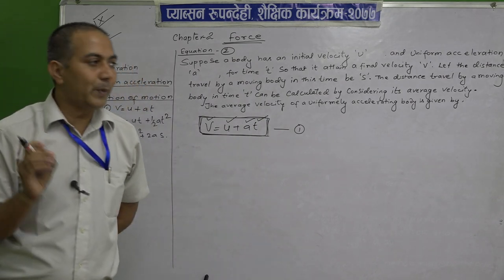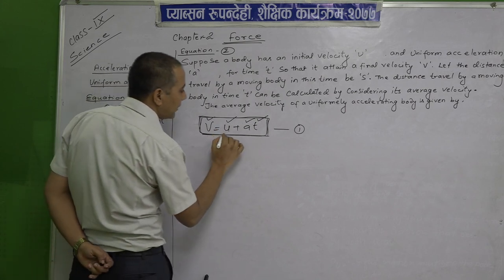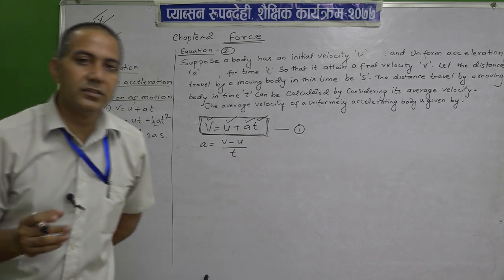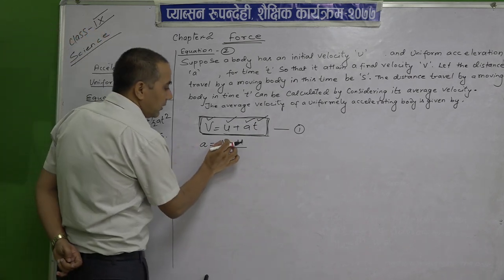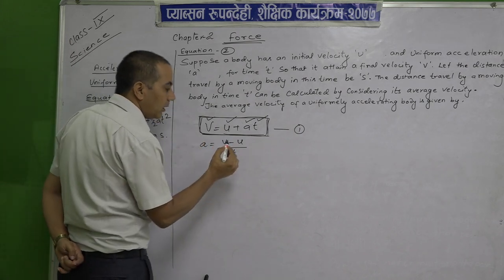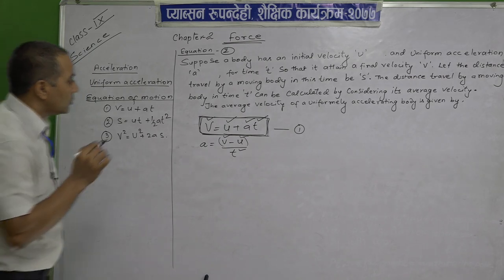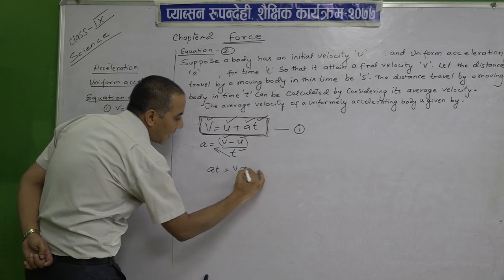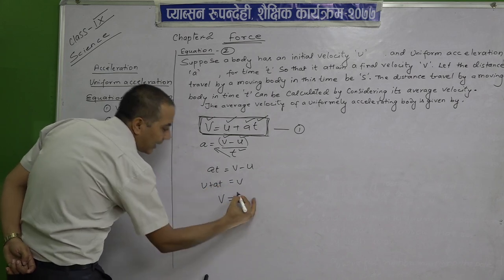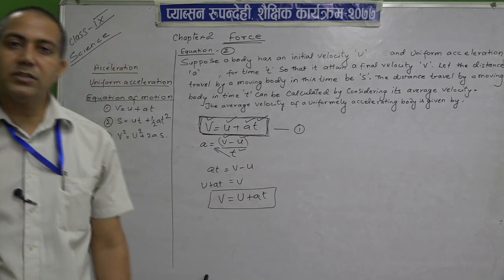How we derive this one? We use the definition of acceleration: A equals to v minus u upon t. Acceleration means the rate of change of velocity — final velocity minus initial velocity upon time taken. After cross multiplication, A t equals to v minus u, then bringing u to the other side: v equals to u plus A t. In this way, we derived the first equation of the motions.